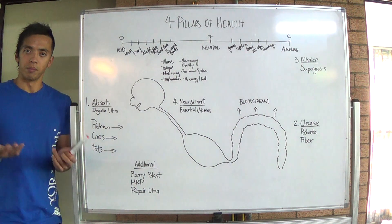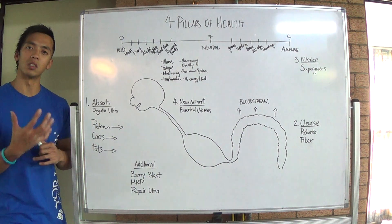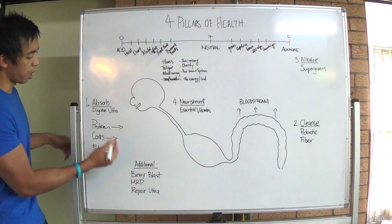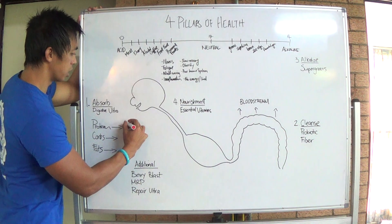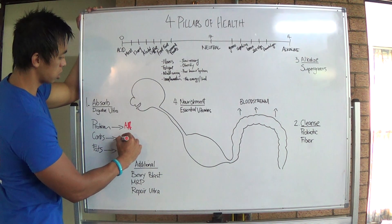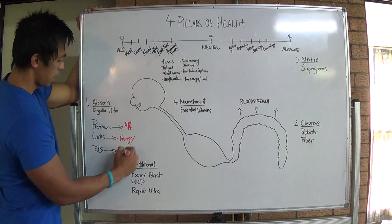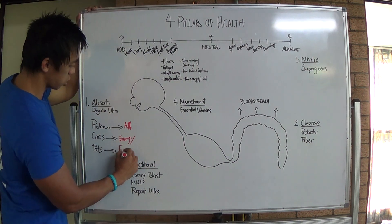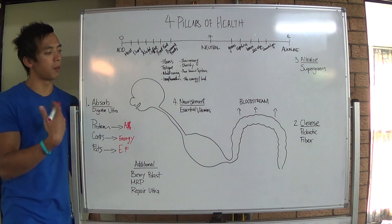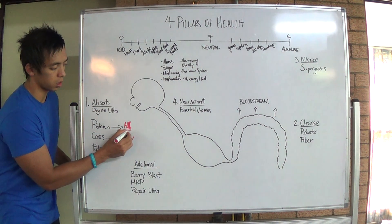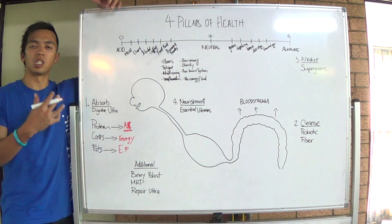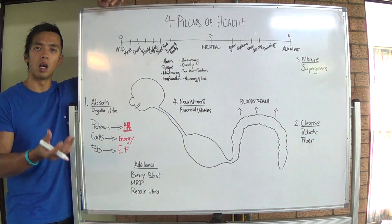For example, chicken is a protein, pasta is a carbohydrate, and almonds are good fats. When you consume any of those foods, they must be broken down by the body. Chicken must be broken down into amino acids, carbs are broken down into glucose or energy, and fats into fatty acids. This breakdown happens by digestive enzymes, which are found in the body and aid in the process of digestion.